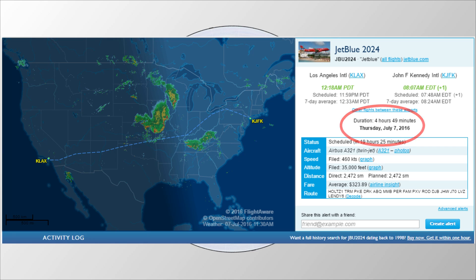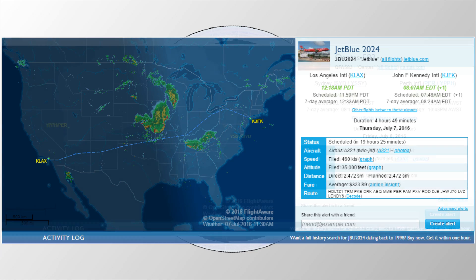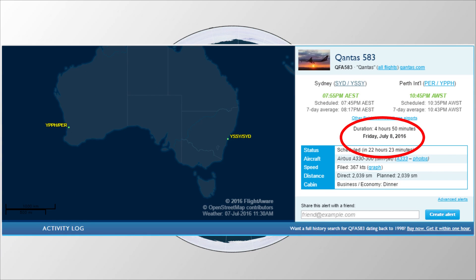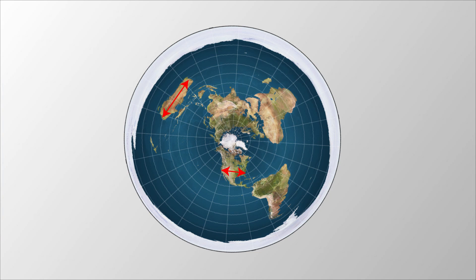On that note, this is also almost exactly the time it takes to fly between Sydney and Perth. That's interesting, since on the flat earth, Australia is almost twice as wide as the US.